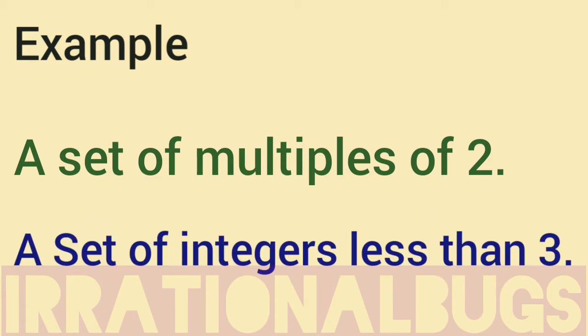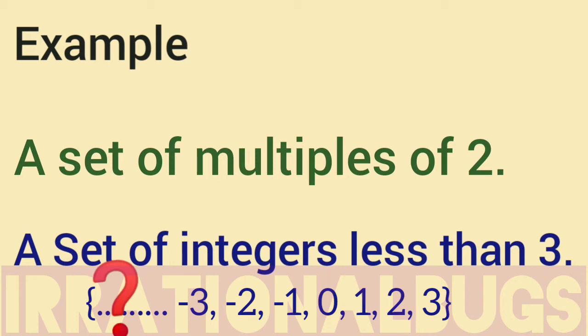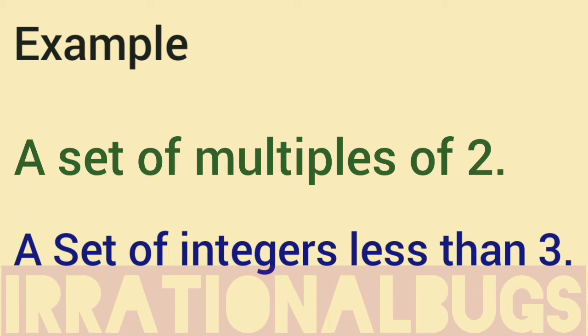Again, set of integers less than 3. Upper limit is 3, but lower limit we don't know where to start. That means this number line is uncountable on the left side. Uncountable, thus infinite.